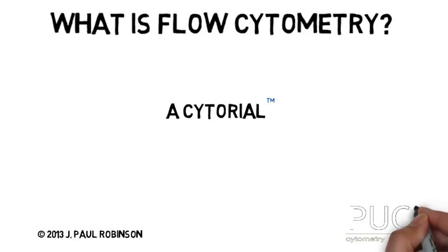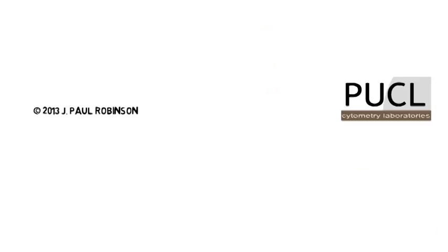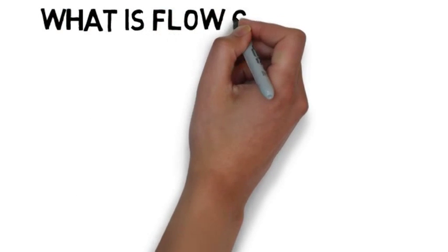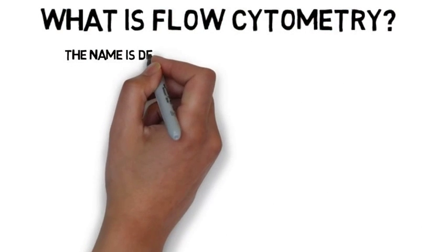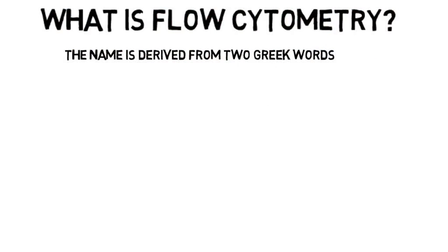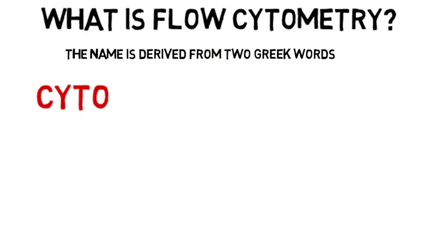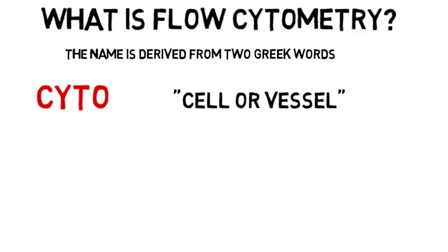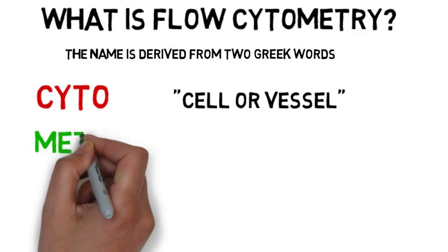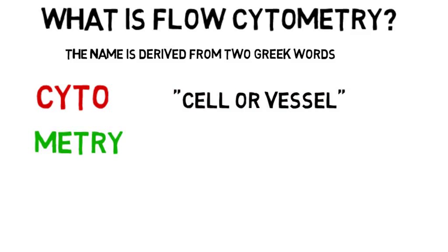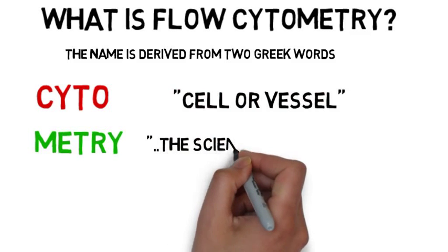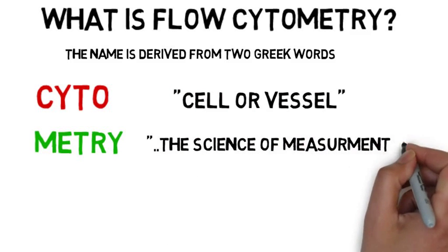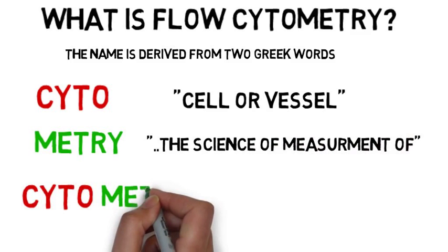So, what is flow cytometry? It's a great question, and you might think it all sounds Greek. Oddly enough, it is Greek. The word cyto means cell or vessel, and the word metri or metry means measurement. So when we put the two together, we get cytometry, the measurement of cells.